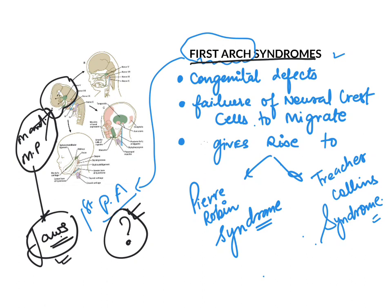Let's look at the major points regarding this topic. First, it is a congenital defect — meaning it can be seen from the period of birth itself. Secondly, there is a failure of neural crest cells to migrate into the first pharyngeal arch. Because the neural crest cells are not able to migrate, a first arch syndrome or defect is seen in the baby.